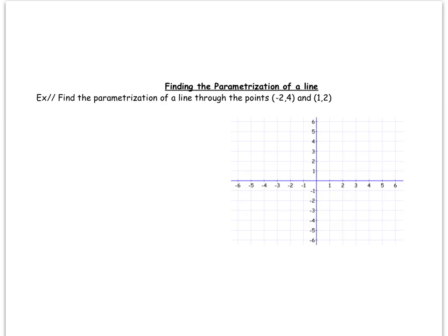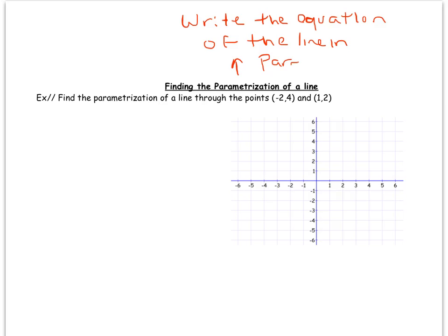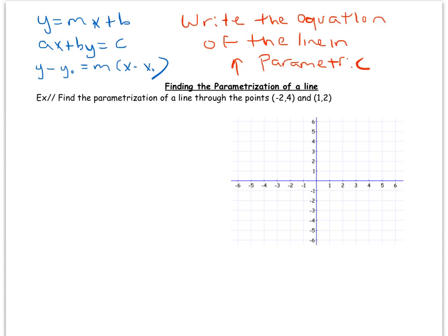Here we're going to look at finding the parametrization of a line — all that means is to write the equation of the line in parametric form. Recall that some standard forms of equations of lines in rectangular form include y = mx + b, ax + by = c, and point-slope form. Those are our standard forms in rectangular form, but in parametric form they look somewhat different.